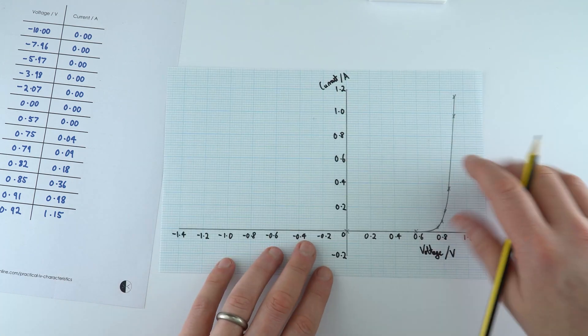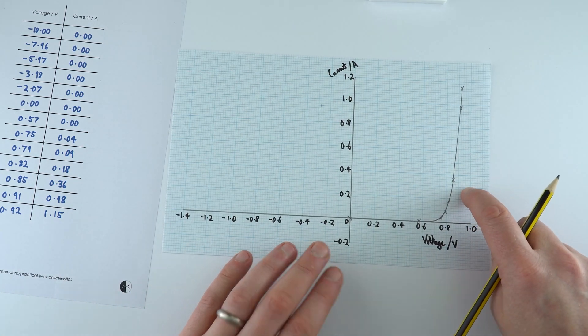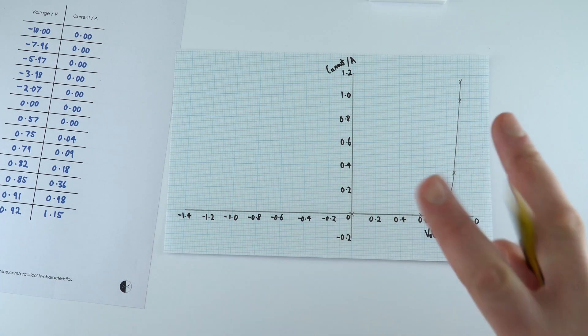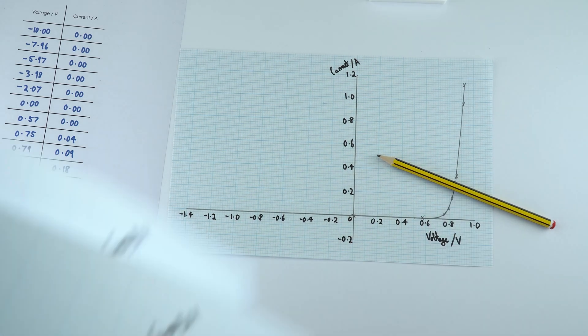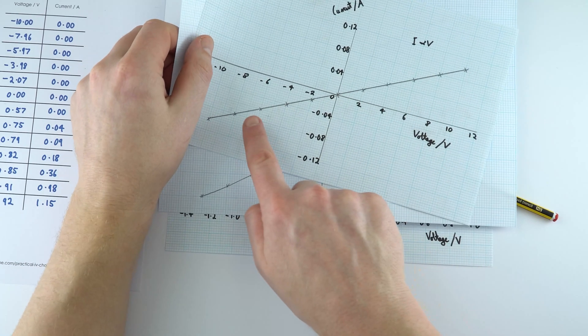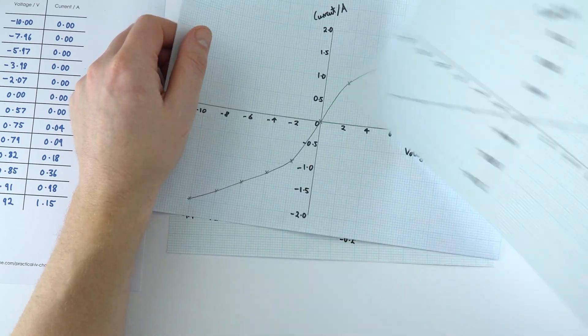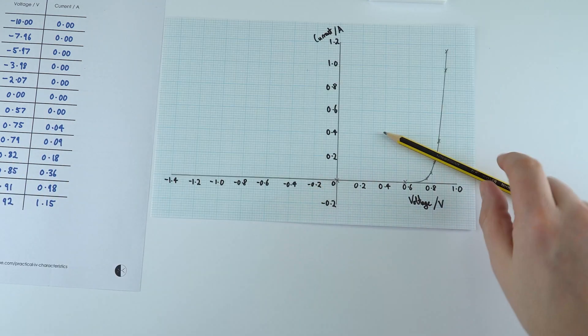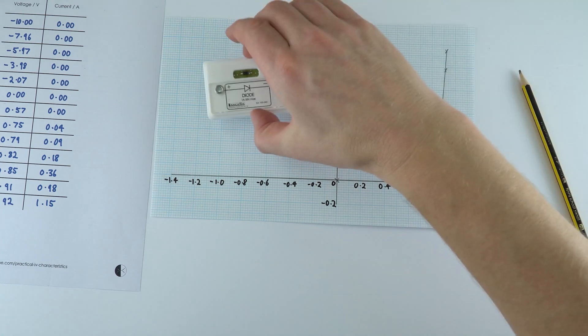So this is now the IV characteristic for a diode. Basically we have this steep rise over here, and we can see how that is different to maybe if you have a resistor where we've got this straight line, or even a lamp which has this S-shaped curve. This one here is a characteristic shape of a diode.